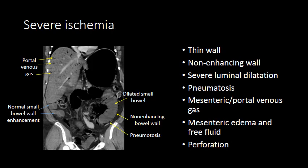In severe ischemia, the bowel will often be quite dilated, the bowel wall will be thin and non-enhancing, and pneumatosis will begin to develop. The pneumatosis can then progress to mesenteric venous gas, where gas has migrated from the wall of the bowel into the mesenteric veins. The gas then travels through the mesenteric veins to the liver to create portal venous gas.